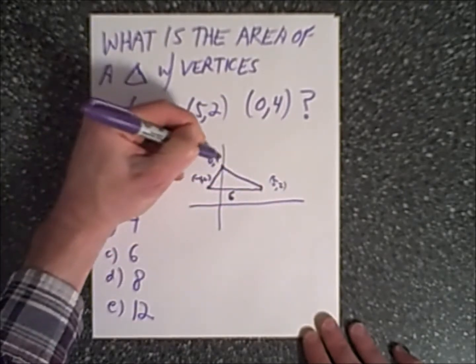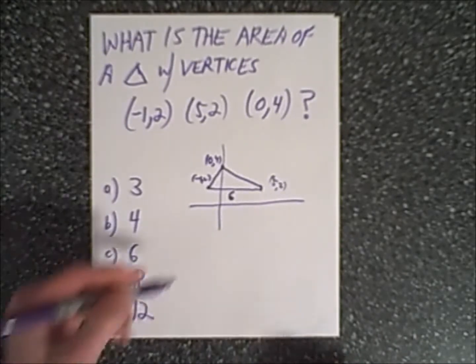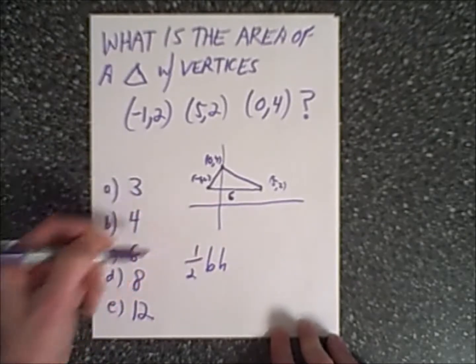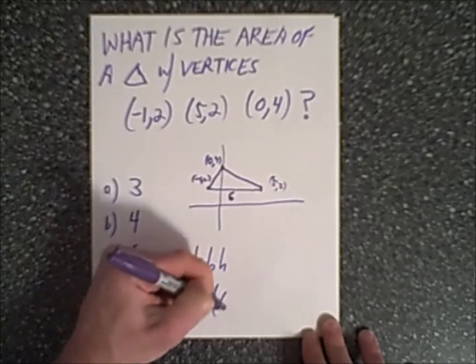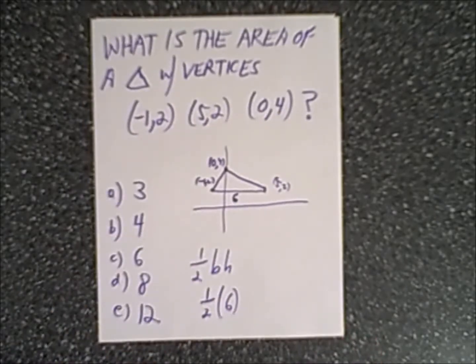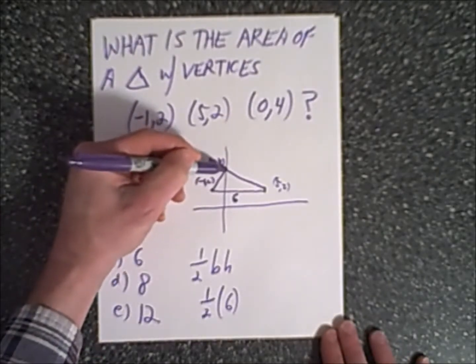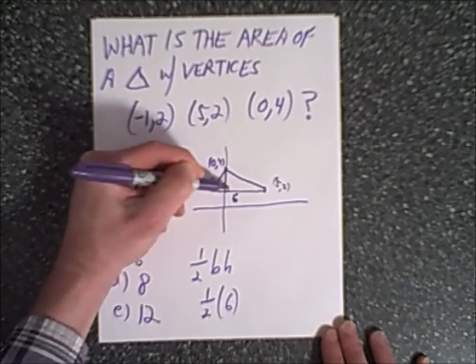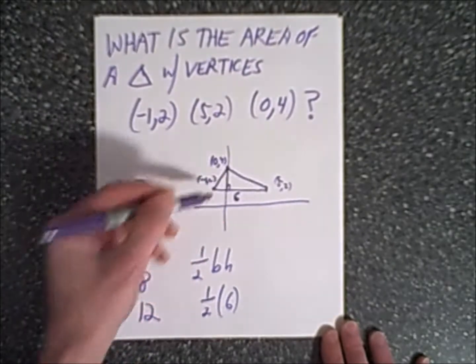Now all you have to basically do is remember what is the area of a triangle. It is one half base times height. Our base we just mentioned is 6, so now we have one half times 6. What's the height? If we draw a line from this top vertex and drop an altitude, we would find that this is the height of the triangle with a base of 6.